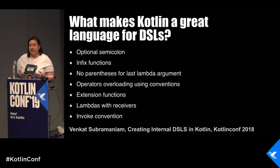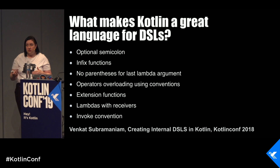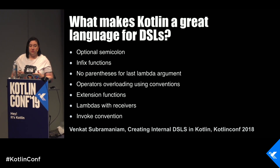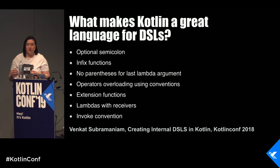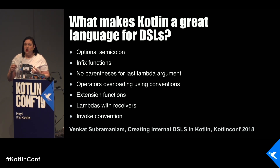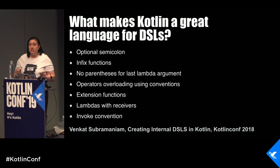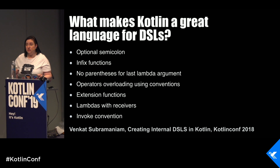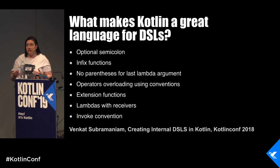What makes Kotlin a great language for DSLs? This list was actually presented by Venkat Subramaniam at the last KotlinConf. Some language features that support creating fluent DSLs are: the optional semicolon, which removes syntactic noise; infix functions that improve readability; not requiring parentheses around the last lambda argument; operator overloading using conventions; extension functions that make existing code more fluent; and two relatively unknown features — lambdas with receivers and the invoke convention.